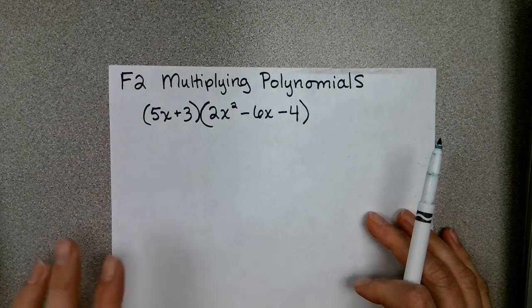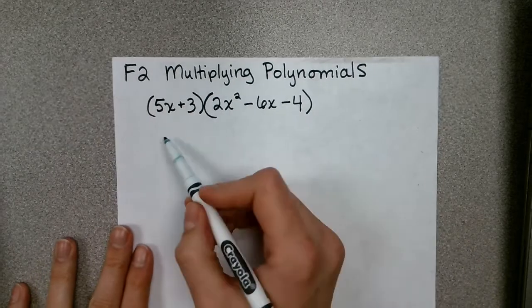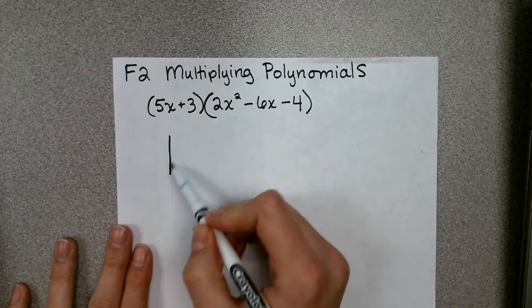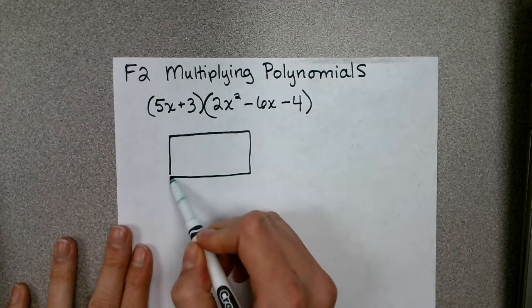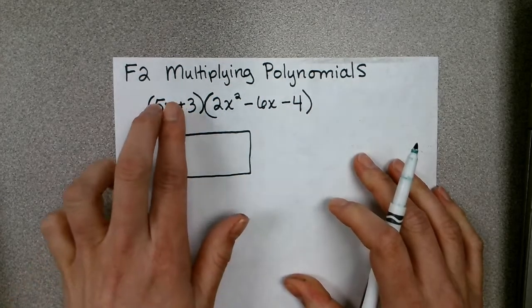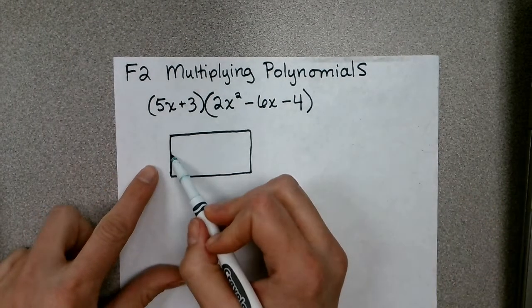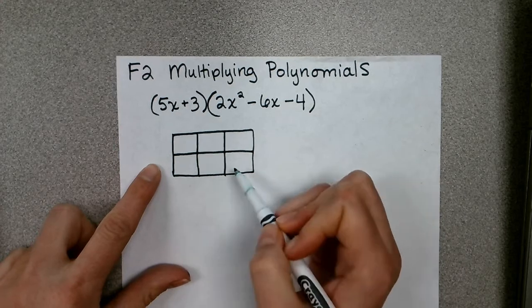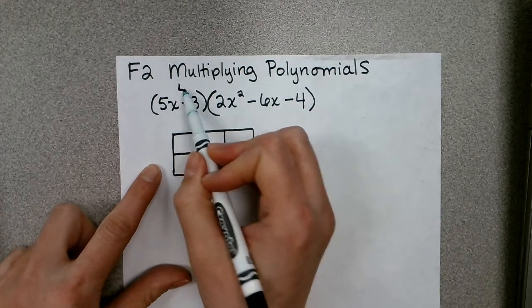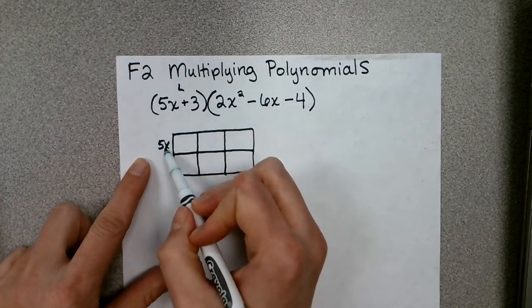So for a problem like this, if you use the area model, you would need to make sure your rectangle fits the number of terms that you have. Instead of having a 2 by 2 like we did in the other problems, you're going to have a 2 by 3 rectangle.